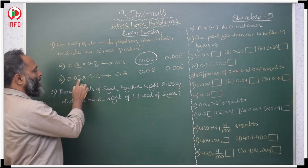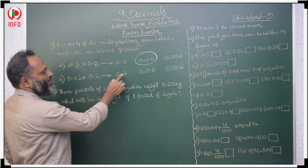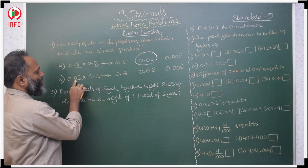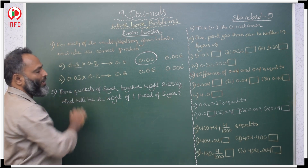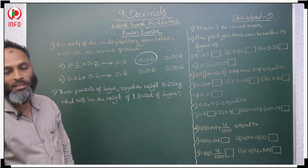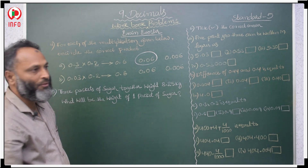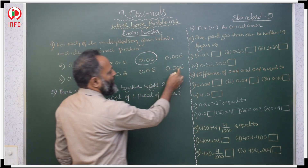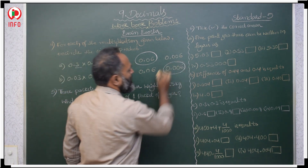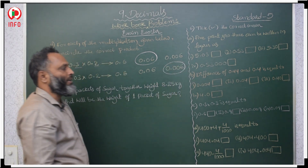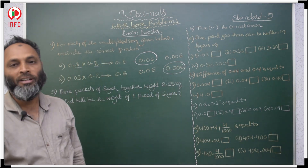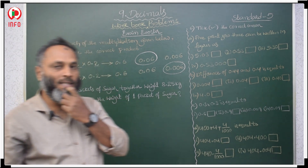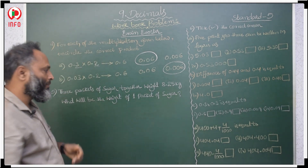Next: 3 twos are 6. Here after 1 digit, after 2 digits, total after 3 digits we keep the decimal. After 3 digits: 0.006 is the right answer.